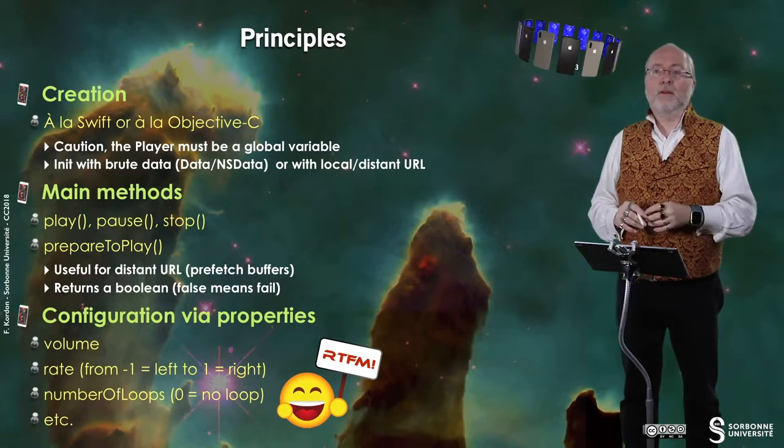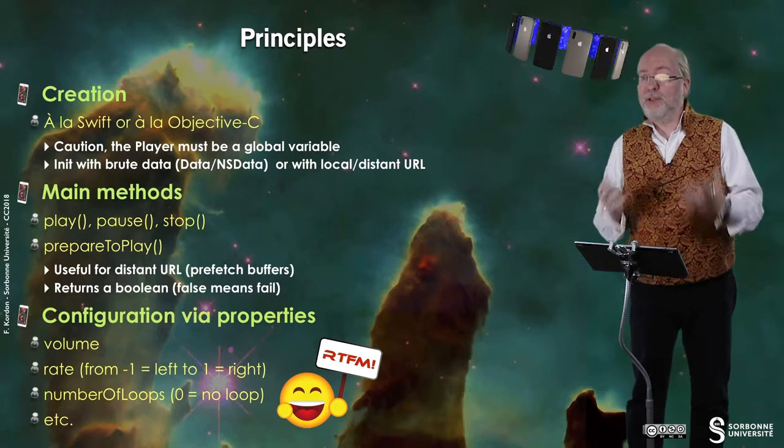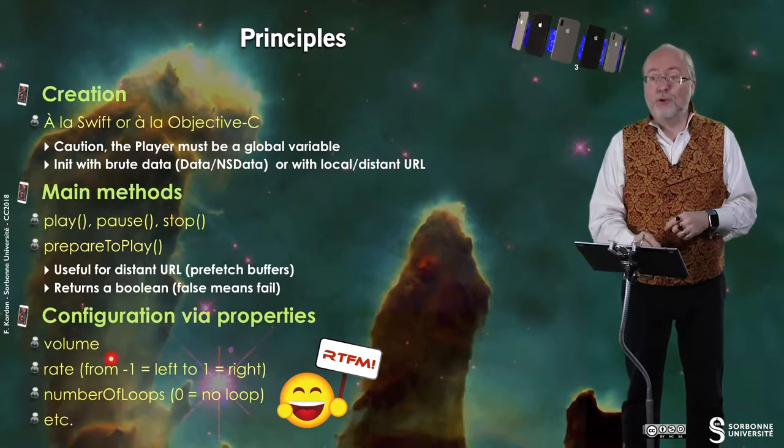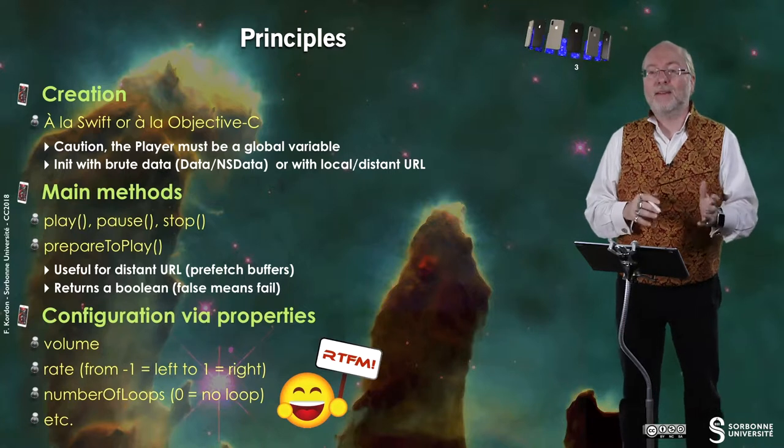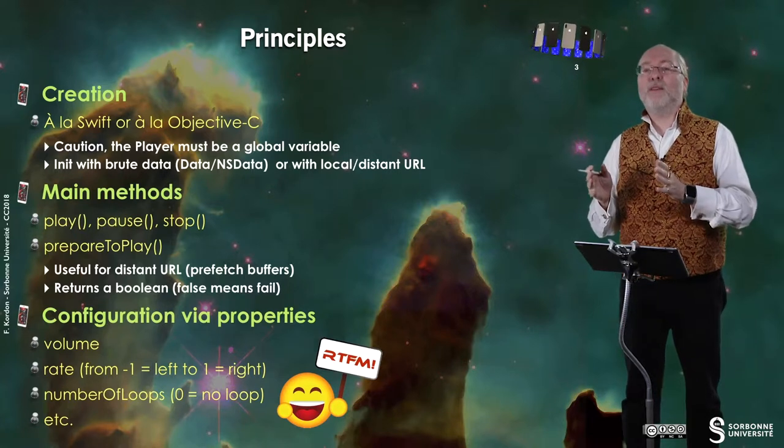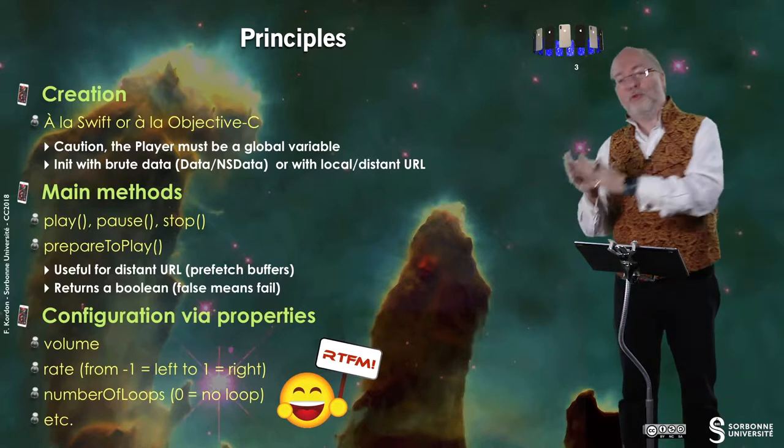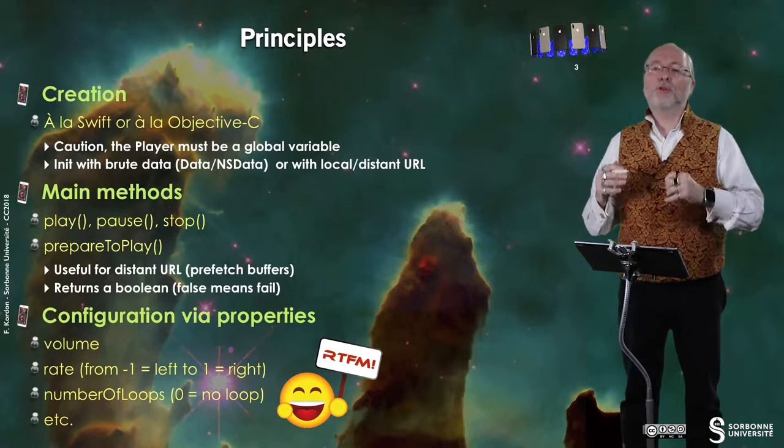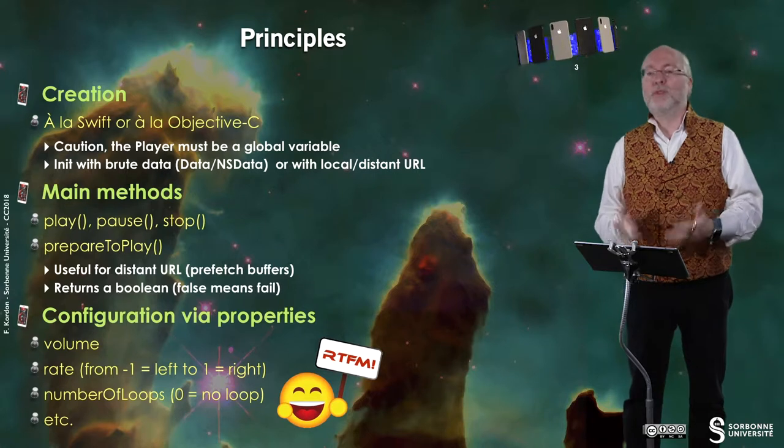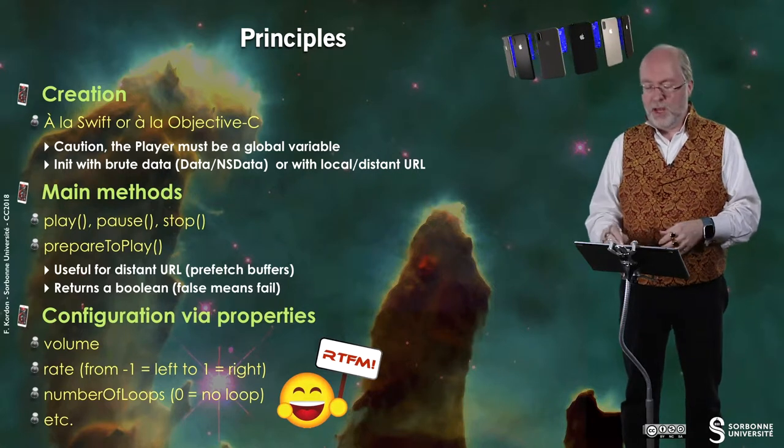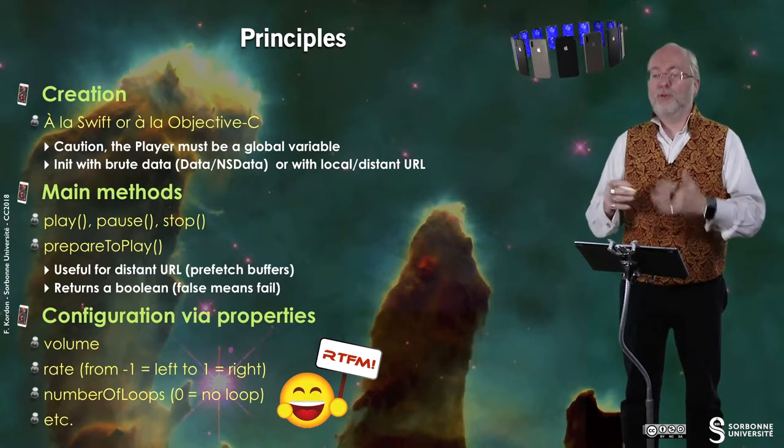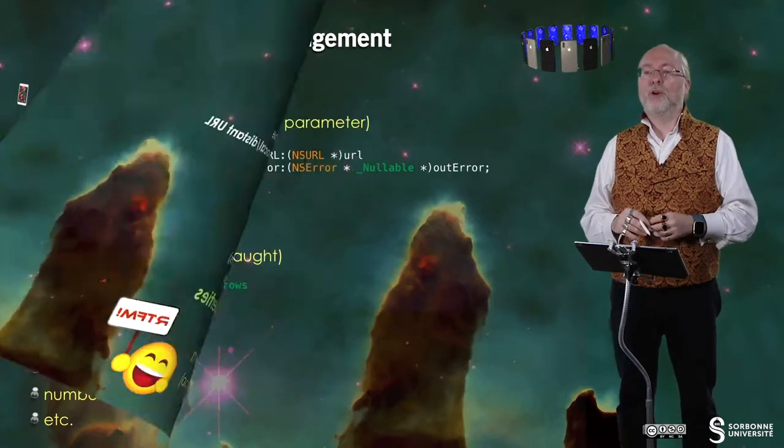You can configure your player thanks to properties. You have volume. You have rate. Rate will define if you want to push everything from the left or to the right. And you can also specify the number of loops. Zero is no loop. And you have more. Go to the Fantastic Manual to learn that.